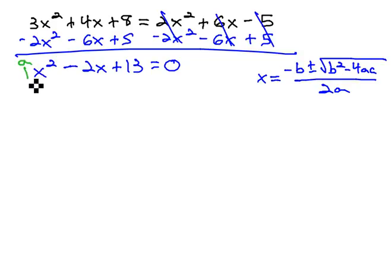As we do this, we remember a is the number in front of x squared, b is the number in front of x, and c is the constant term, after the equation equals 0.